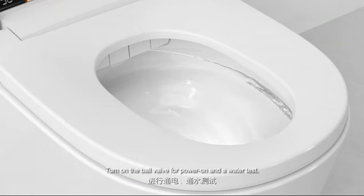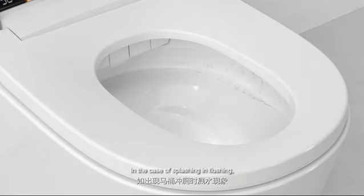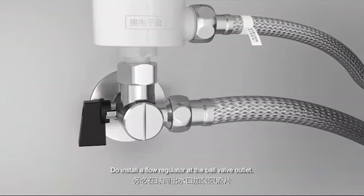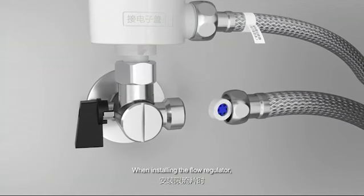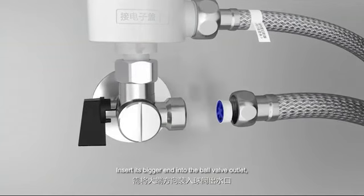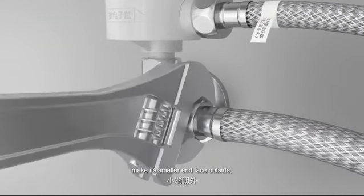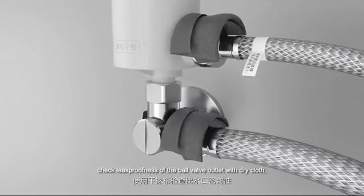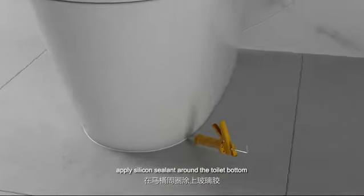In the case of splashing during flushing, install a flow regulator at the ball valve outlet. When installing the flow regulator, insert its bigger end into the ball valve outlet, make its smaller end face outside. Check leak-proofness of the ball valve outlet with dry cloth. Apply silicone sealant around the toilet bottom and make it stand for 24 hours.